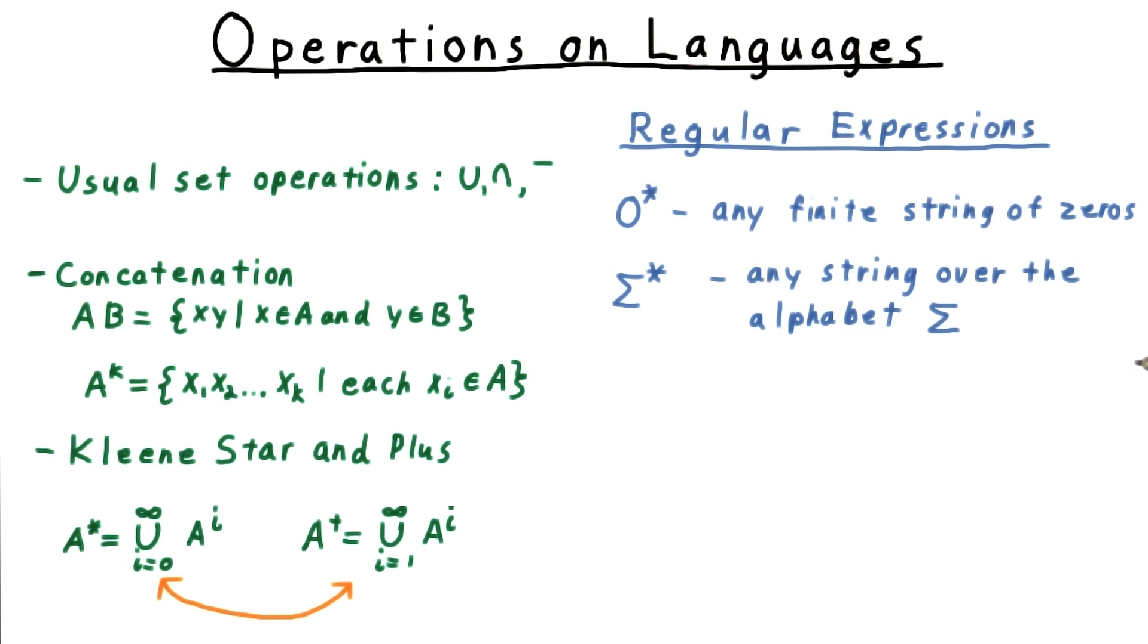For those who have studied regular expressions, this should seem quite familiar. In fact, one gets the notation for regular expressions by treating individual symbols as languages. For example, 0 star is the set of all strings consisting entirely of zeros. We'll also commonly refer to sigma star, meaning all possible strings over the alphabet sigma.